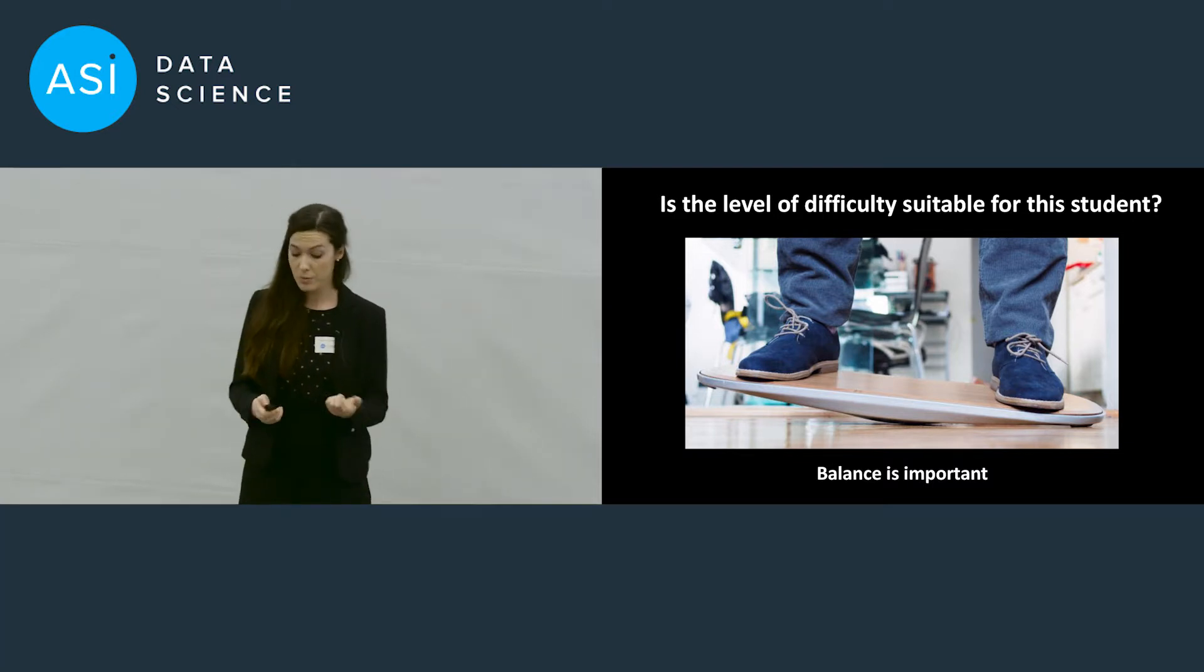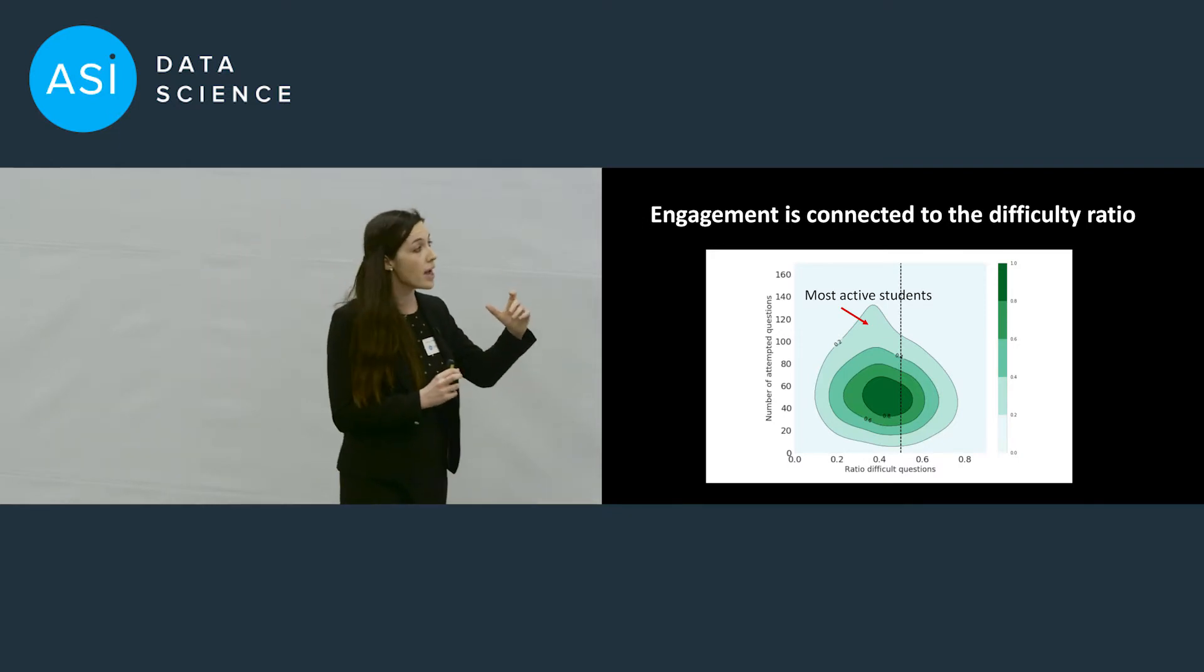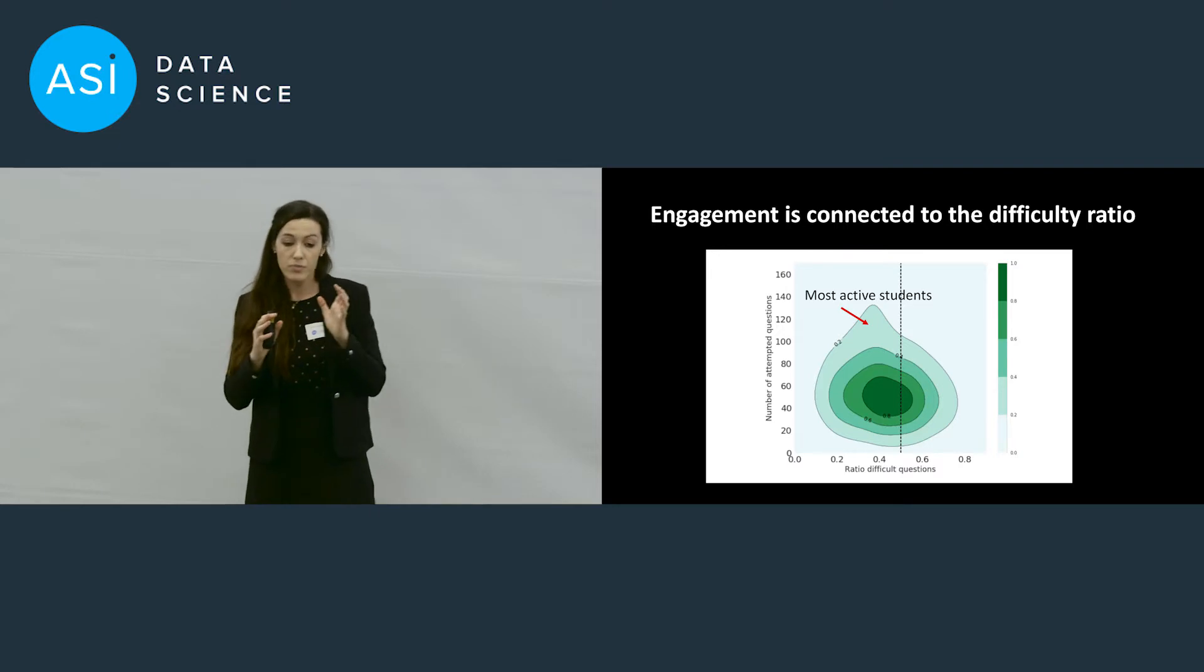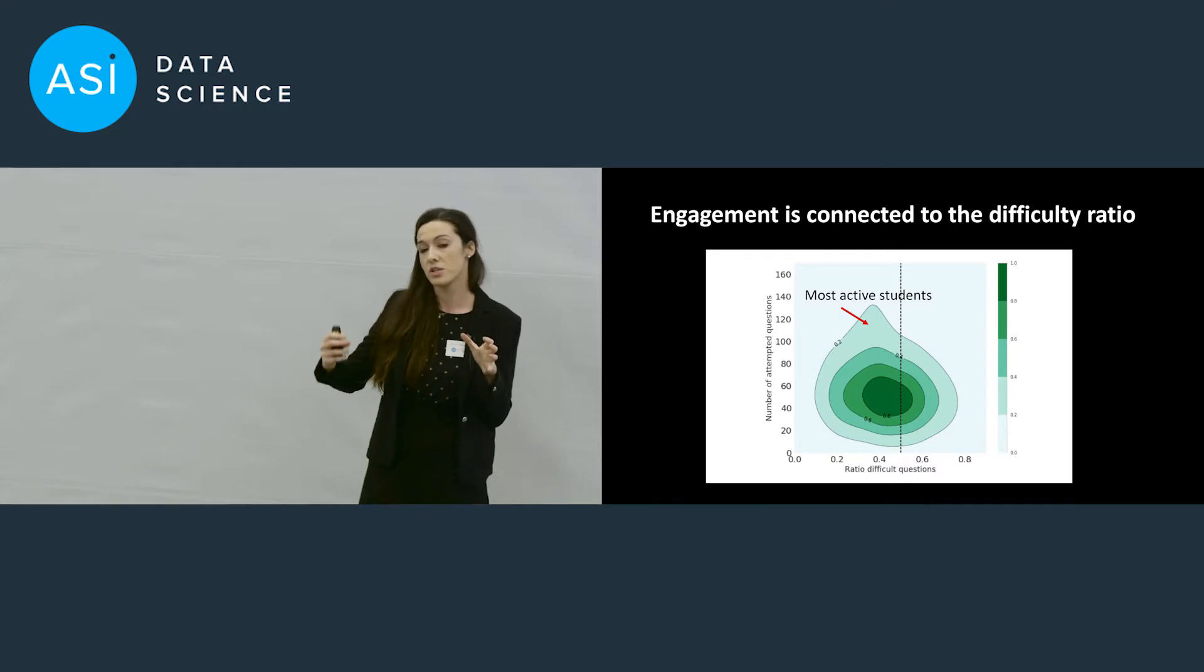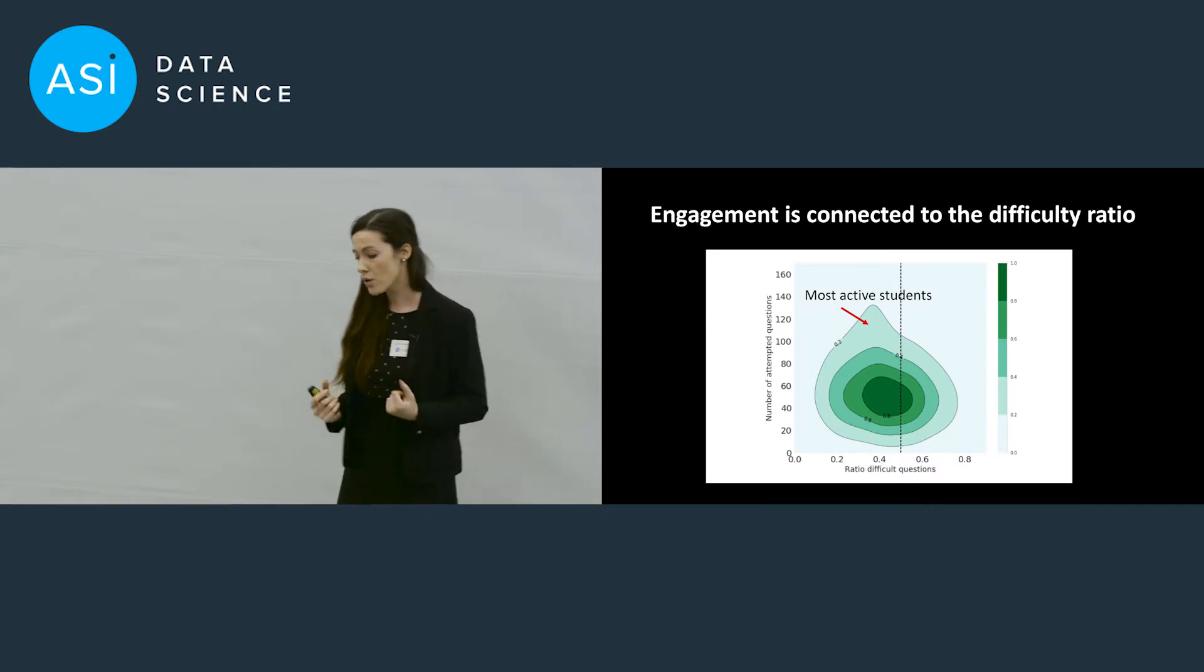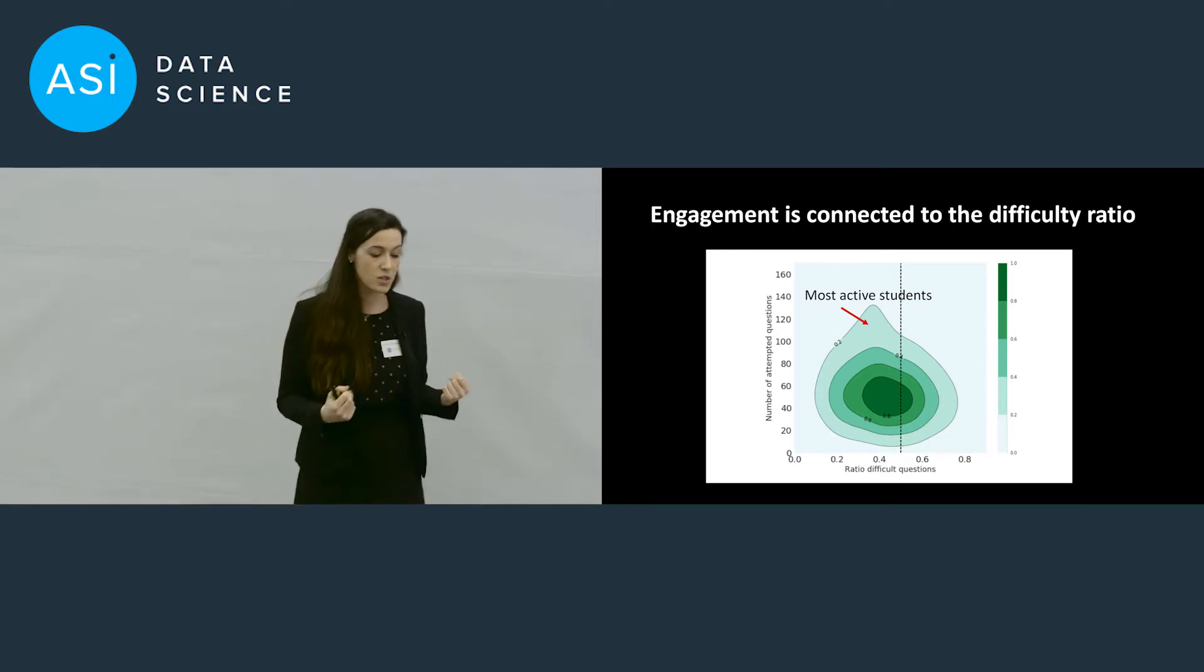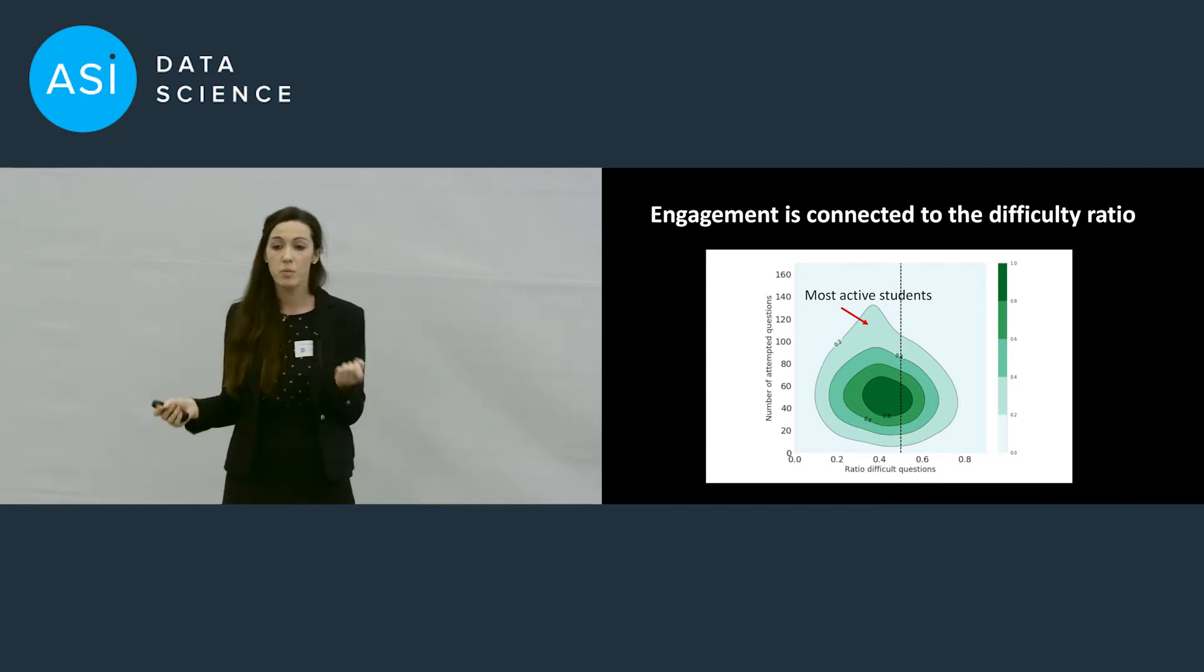What we have at the moment is a small group of most active students, and we can notice that for them the ratio between a difficult and not difficult question is about one difficult question every three questions that they attempt. So if we could know in advance what would be difficult or not for everyone, in that case we could adjust the ratio of the questions that they are meeting on the platform in order to keep everyone very engaged.